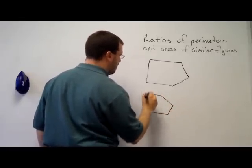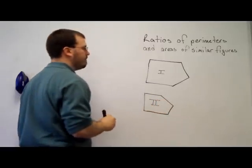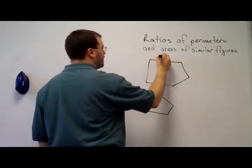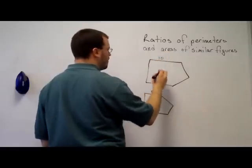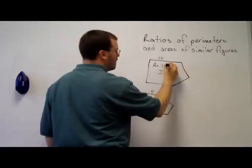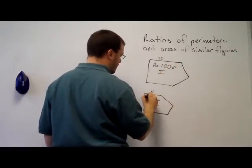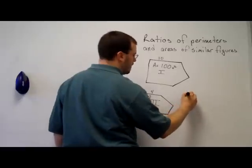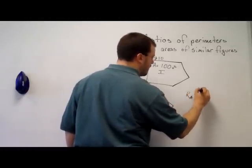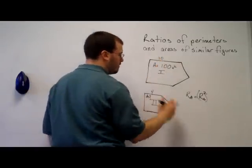If we are given that figure 1 is similar to figure 2, and the area, let's see, this side length is 10, this side length is 4, and if we're told the area of figure 1 is equal to 100 units squared, what's the area of figure 2? Well, the ratio of the areas is equal to the ratio of the sides squared. So I find my ratio of the sides, 10 over 4, squared,